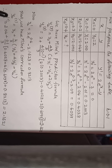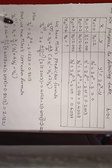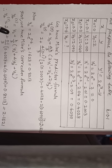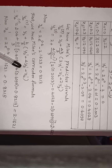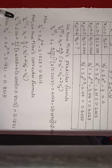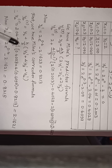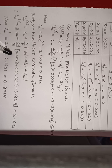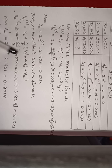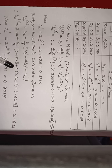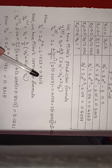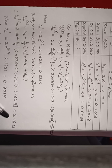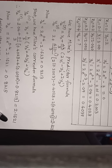Now we have Milne's corrector formula. y4(C) — C means corrector — is equal to y2 plus H by 3 into (y2 dash plus 4y3 dash plus y4 dash). So y4(C) = 2.04 plus 0.1 divided by 3 into (0.4028 plus 4 into 0.6097 plus 0.8213). It becomes 2.1621.